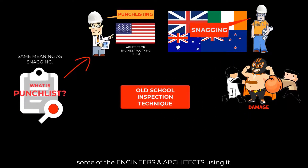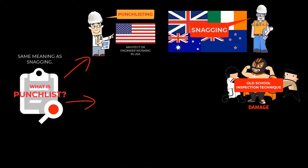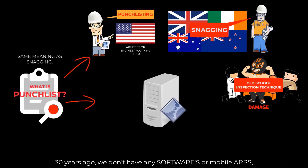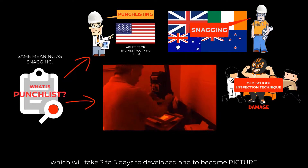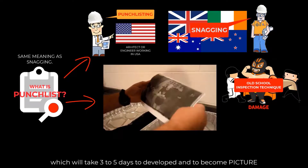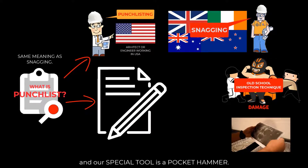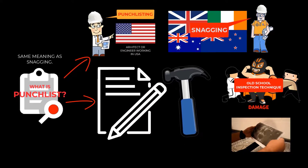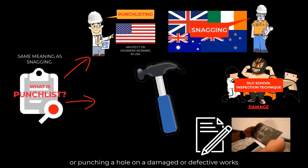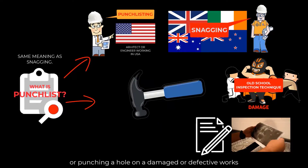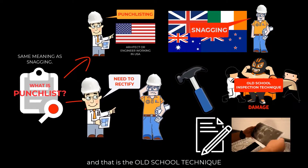This is an old-school technique which, I think, some engineers and architects still use today. Let me give you a short story: 20 years ago we didn't have any software or mobile apps, no digital camera — instead we were using film cameras, which would take three to five days to develop into a picture. Instead of mobile apps and software, we were using pen and paper, and our special tool was a pocket hammer. We used the pocket hammer by striking or punching a hole on damaged or defective works, so that the contractor would surely rectify their works. That was the old-school technique.